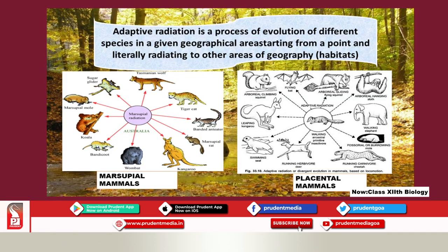So let us see the definition. Adaptive radiation is a process of evolution of different species in a given geographical area, starting from a common point and literally radiating to other areas of geography or habitat. That is what we saw in the Darwinian finches.